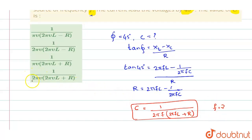So in terms of NU when you are writing it, it is 2 pi NU into 2 pi NU L plus R. So option 4 is the right answer.